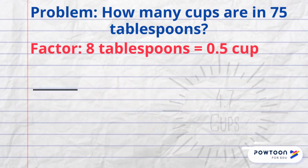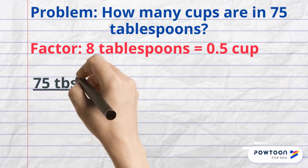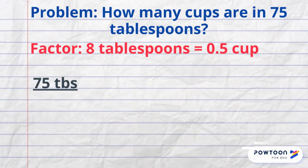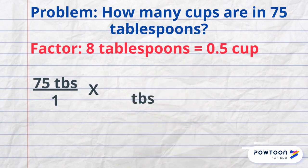The answer is 4.7 cups. Start with something that is not a factor. In this case, 75 tablespoons. Put it over one to make a fraction. Start the factor by putting units of tablespoons in the denominator and look for factors.